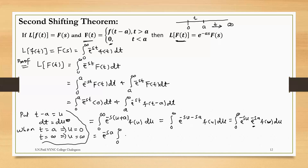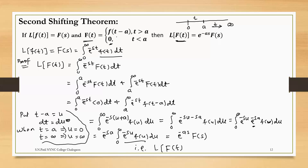We write this constant term e raised to minus s·a outside the integration: e raised to minus s·a times the integral from 0 to infinity of e raised to minus s·u into f(u) du. Now, in a definite integral the variable of integration is not important, so instead of u we can substitute t and get the same term. The value of this integration is capital F(s). So it can be written as e raised to minus a·s into F(s). This is the second shifting property.